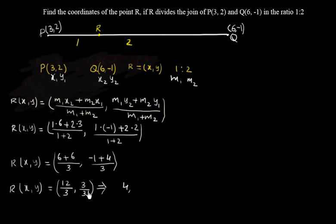By 3, comma 3 by 3 is 1. So what is the point R? R is the point (4,1). R is the point (4,1) which divides the point joining the points (3,2) and (6,-1).